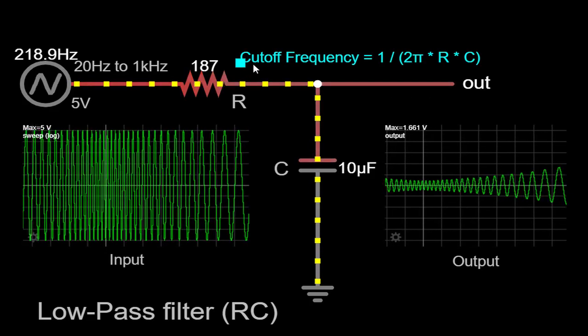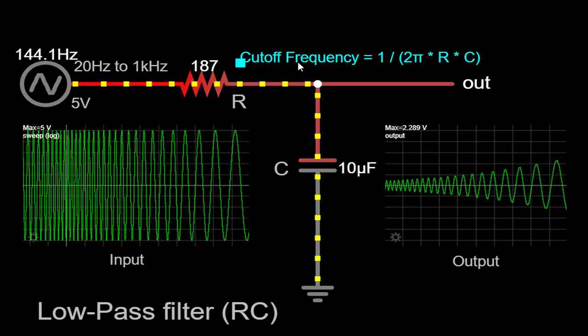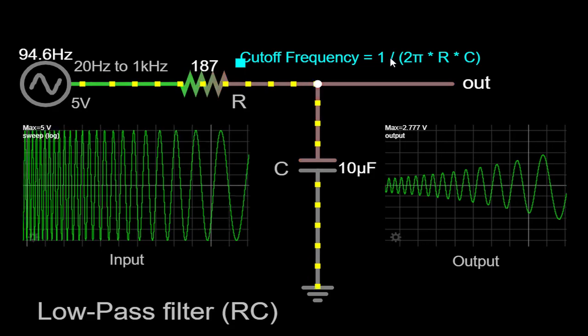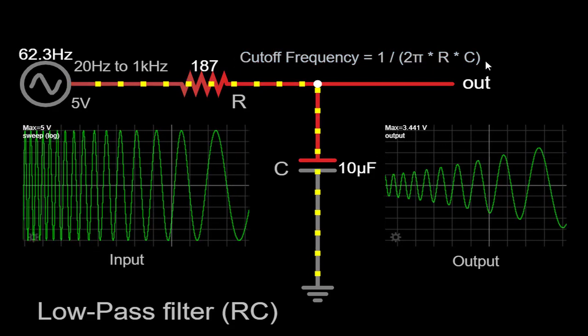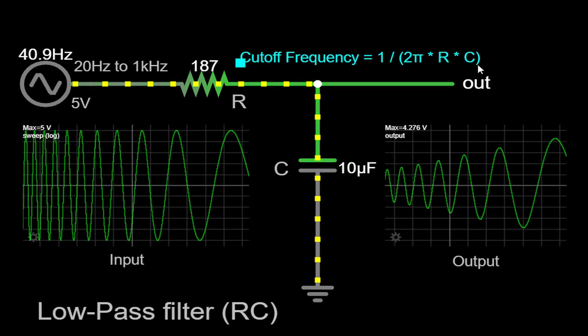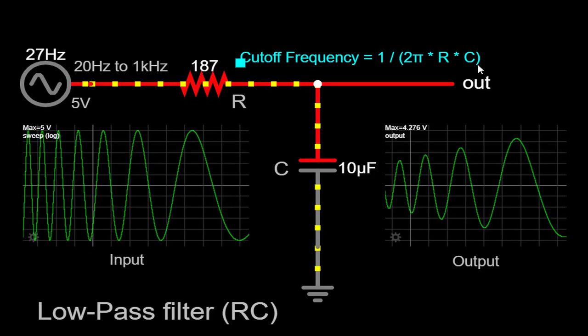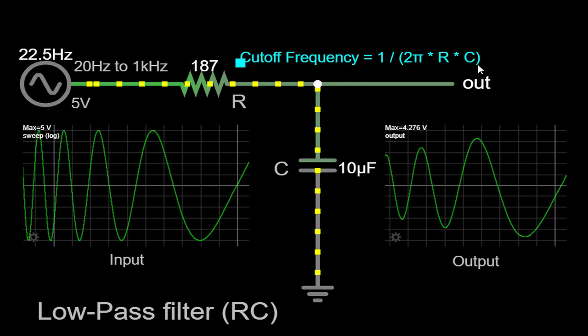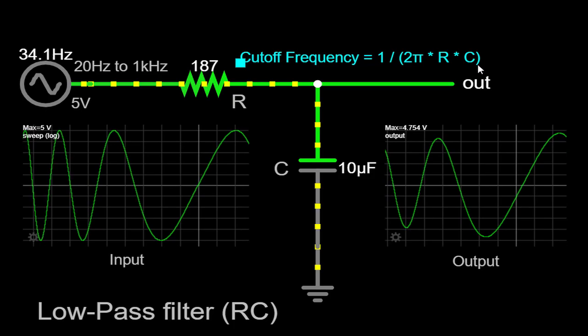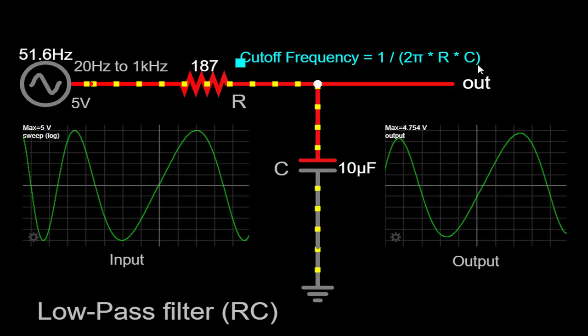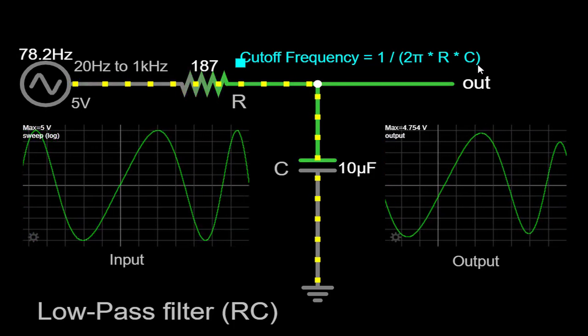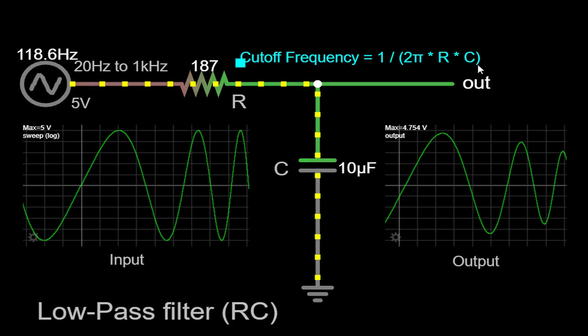Cutoff frequency equals 1 slash 2 pi into R into C. Substituting the values, we find that the cutoff frequency is approximately 848 Hz. Frequencies below the cutoff frequency are passed with minimal attenuation, while frequencies above the cutoff are progressively attenuated.